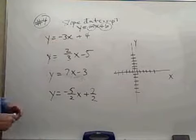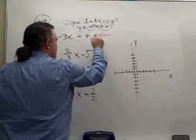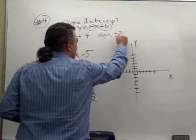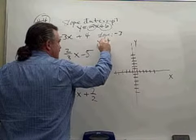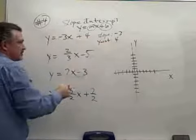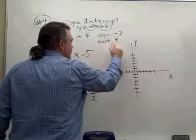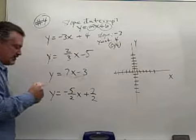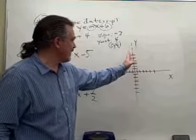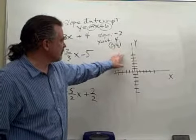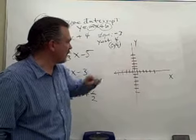For this first equation, that instantly tells me that the slope of this line would be negative three, and the y-intercept would be positive four. Since it's plus four, the y-intercept is positive four, or another way to say it is the point (0, 4). The y-intercept is where the line crosses the y-axis, so the line crosses the y-axis up here where y is four.